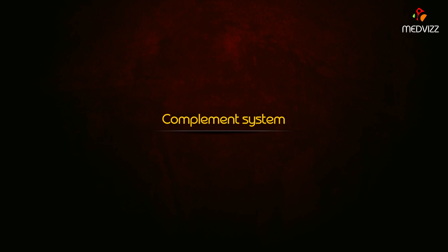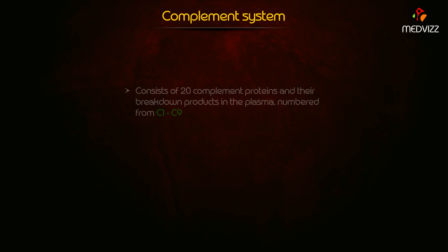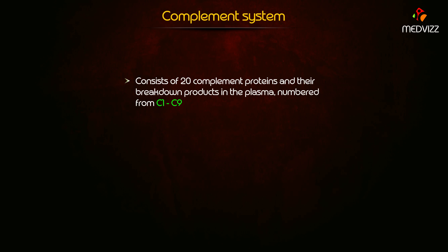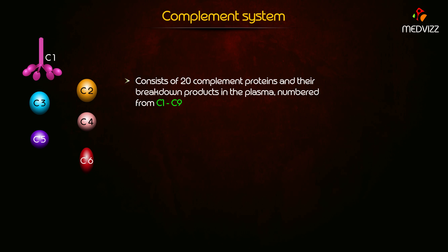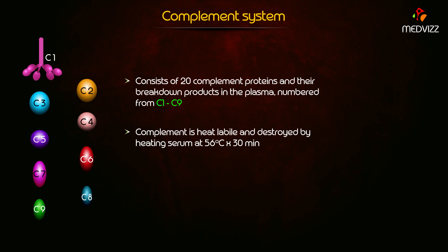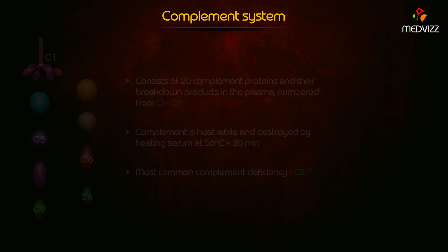The complement system consists of 20 complement proteins and their breakdown products in the plasma, numbered from C1 to C9. Complement is heat labile and destroyed by heating serum at 56 degrees centigrade for 30 minutes. The most common complement deficiency is C2.